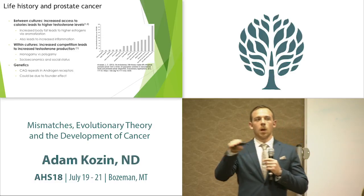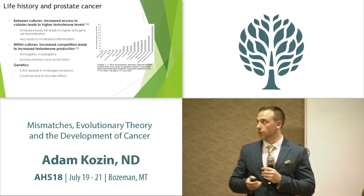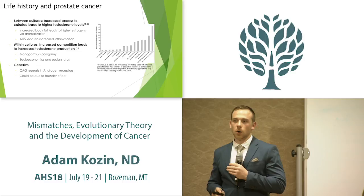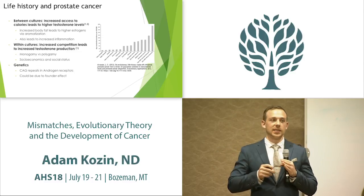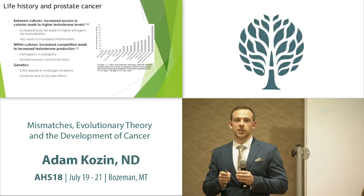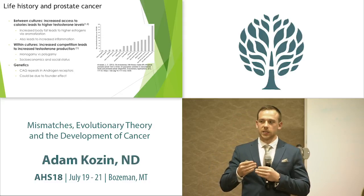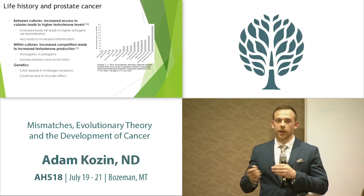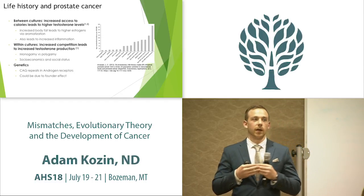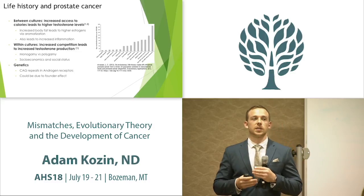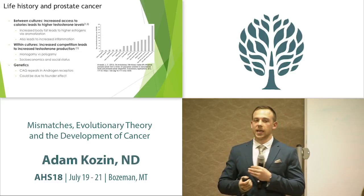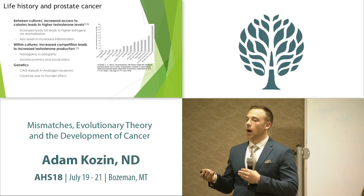Within cultures, we can look at monogamy versus polygamy. The Hadza versus the Datoga tribe in Africa: the Hadza are monogamous — they pair bond with a female, reproduce, and then their testosterone levels decrease. In the polygamous Datoga society, they pair bond but then continue looking for other mates, so their serum testosterone levels never drop, and they have higher rates of prostate cancer versus the Hadza.